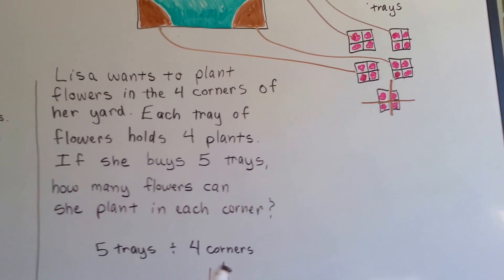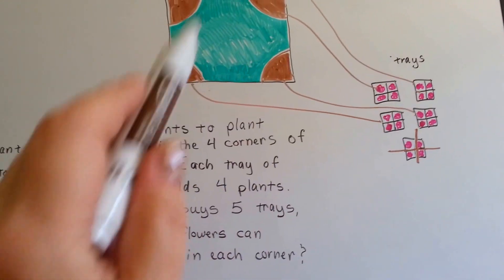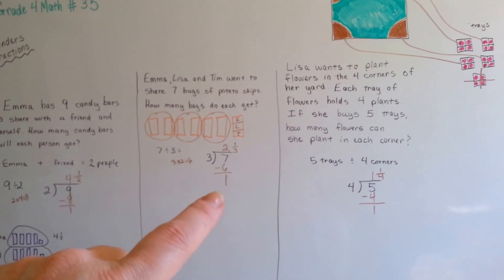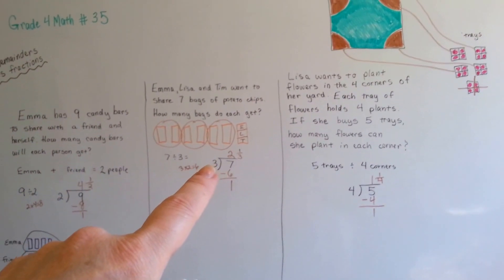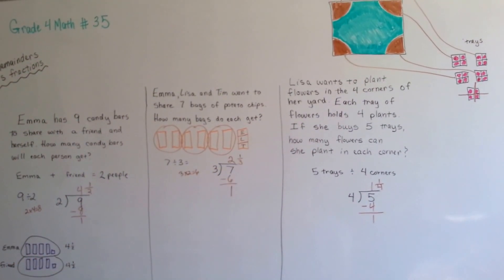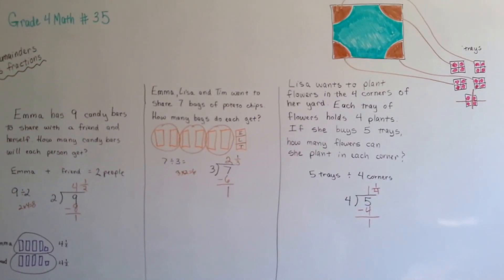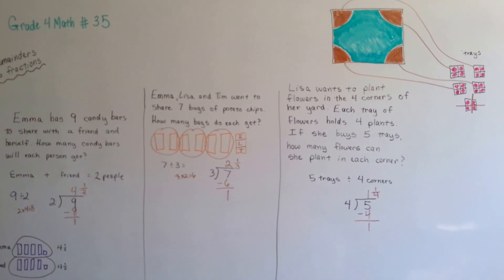One fourth trays of flowers in each of the four corners. So that's how a remainder can be a fraction. You put the remainder on top of the divisor and it becomes a fraction. That's not too hard, was it? We're going to continue talking about division. I'll see you in the next video. Bye.